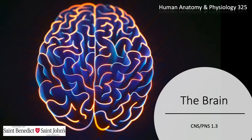Hello again everyone. Today we're going to be focusing on the human brain — the three-pound jello-like consistency mass atop your shoulders with 85 billion neurons.